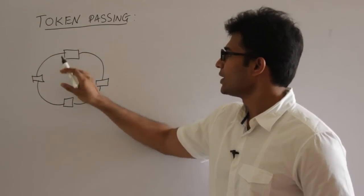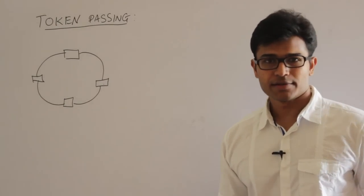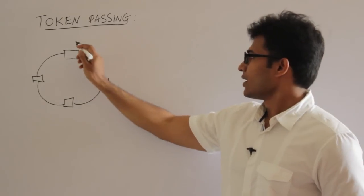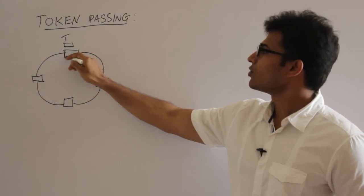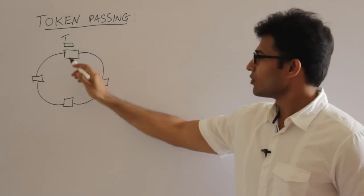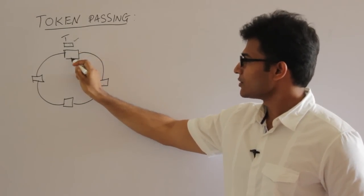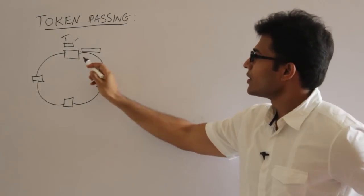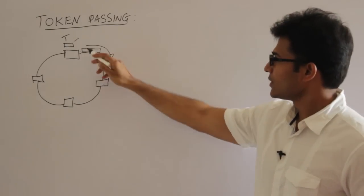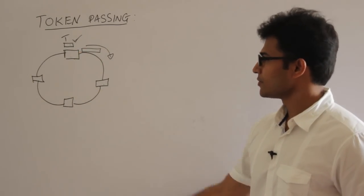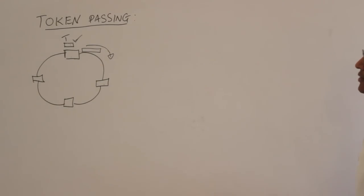In token passing, the advantage is we are not going to have collisions. There will be a special packet called a token revolving in the ring. If any station holds the token, only that station is supposed to transmit data. Since there is only one token, only one station can transmit at a time. The token ring operates unidirectionally — data can go in only one direction. Therefore, there are no collisions.